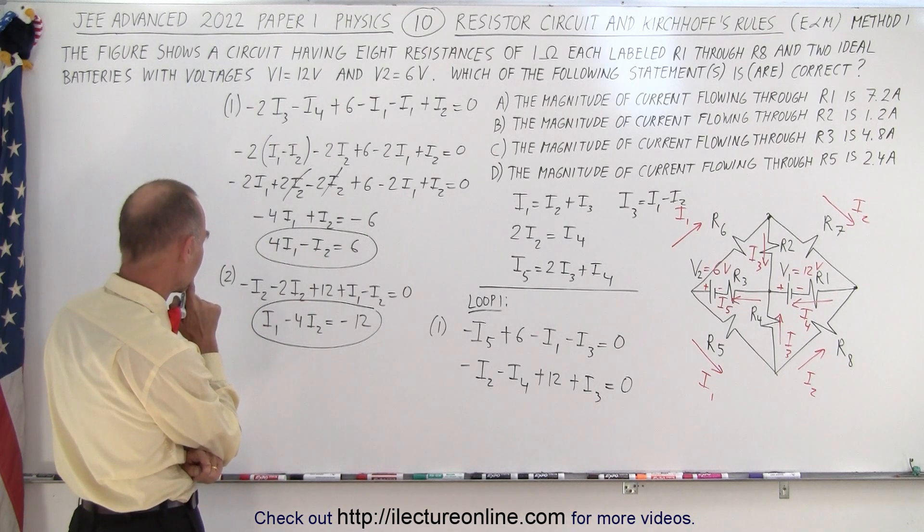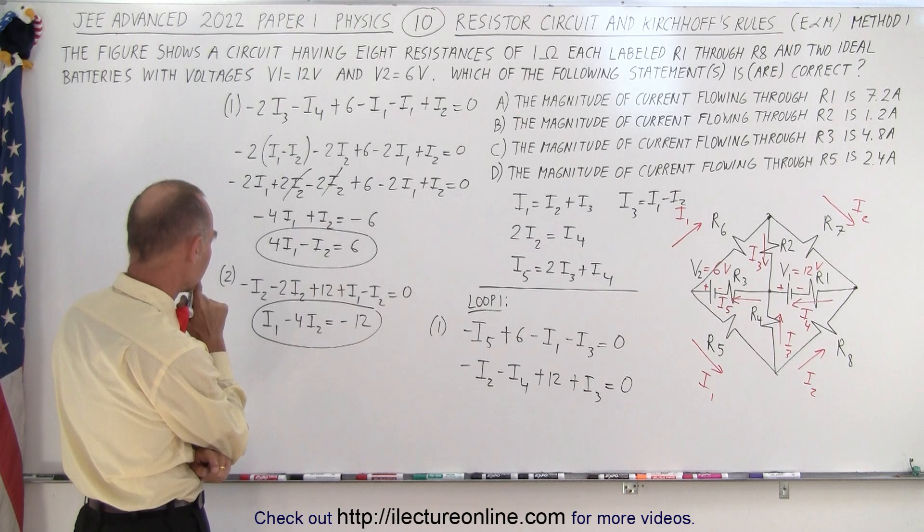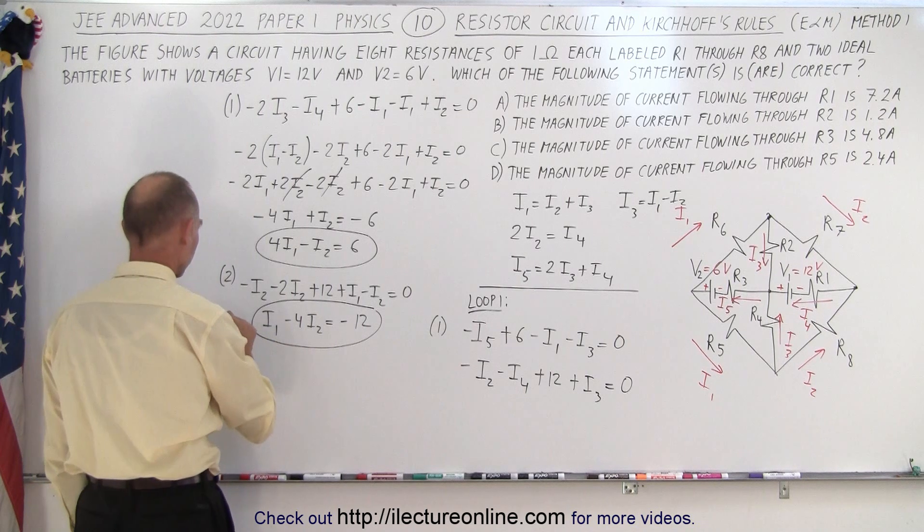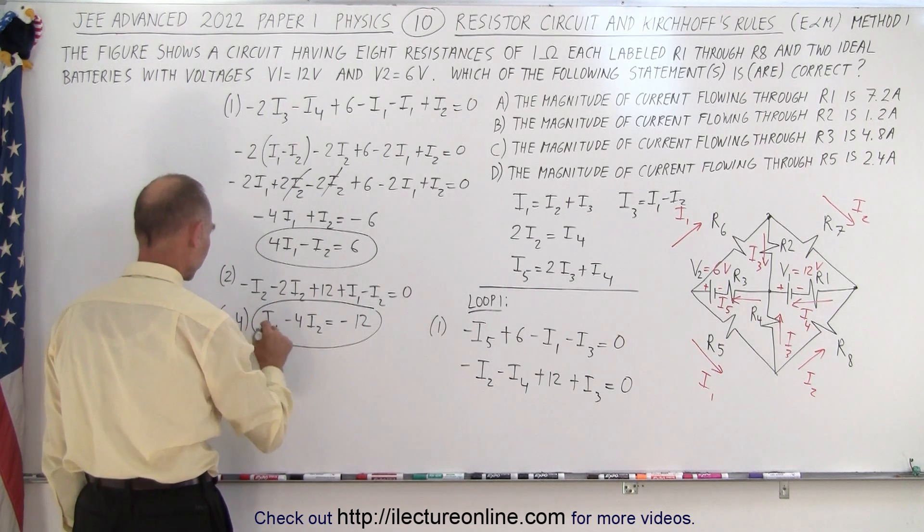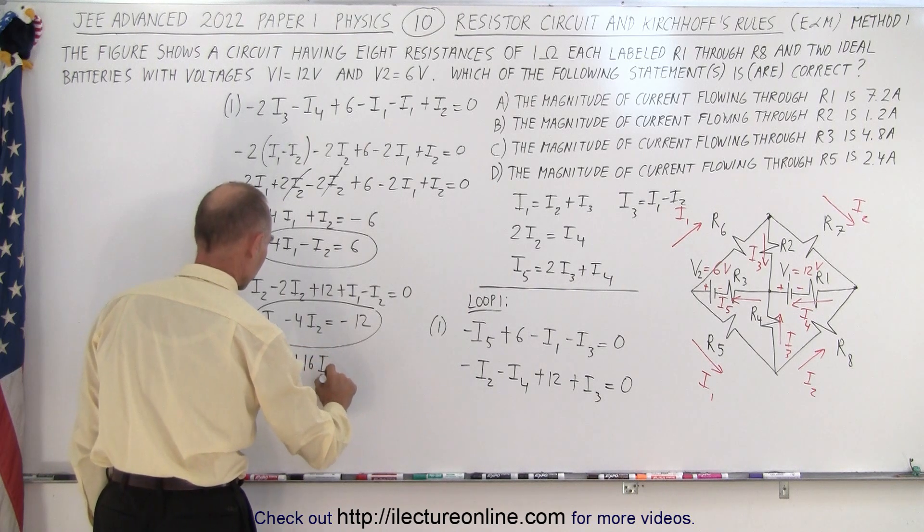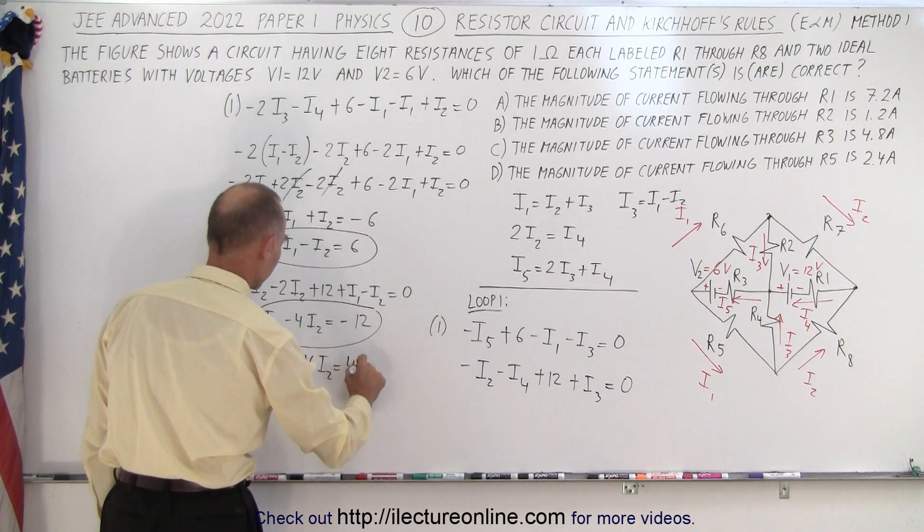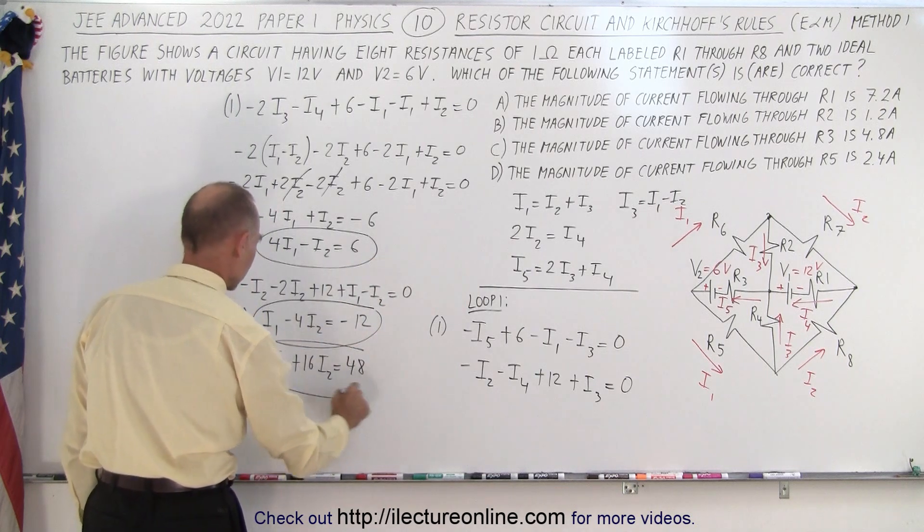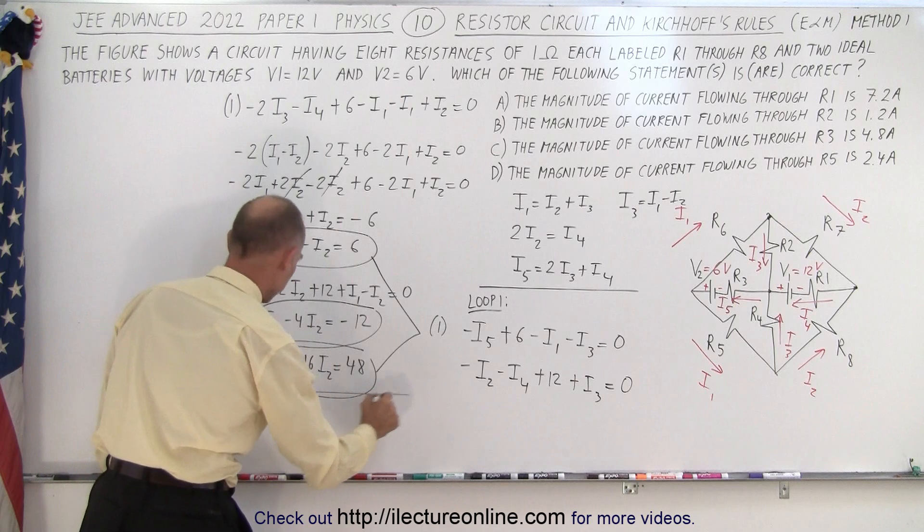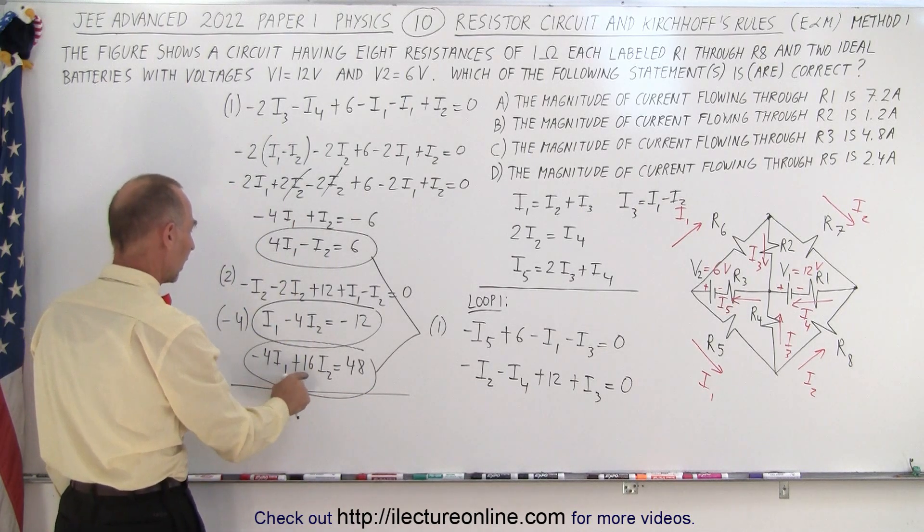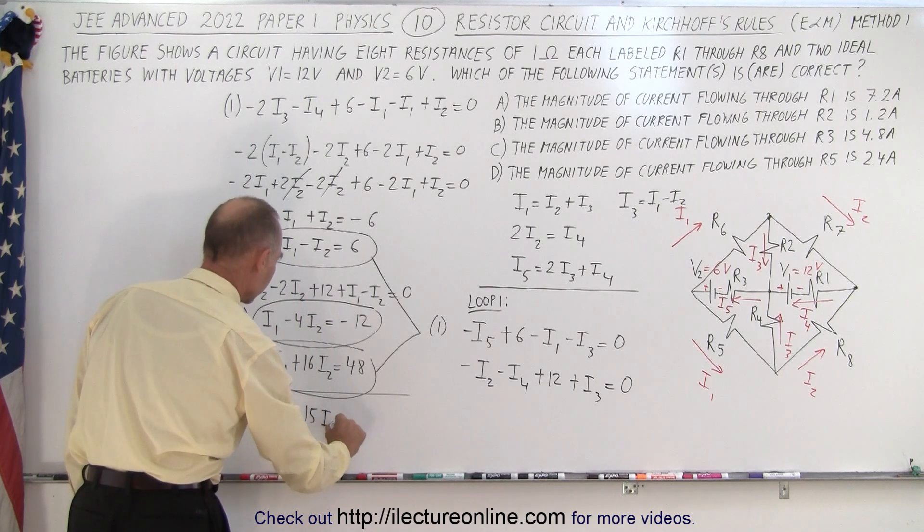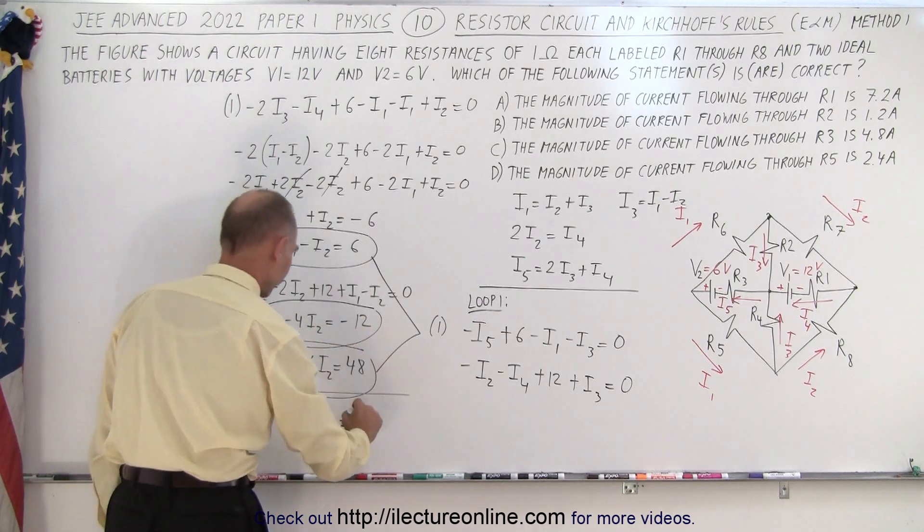How about if I multiply both sides by a minus 4? I'm going to multiply both sides by minus 4, so this gives me minus 4I1, plus 16I2, equals a positive 48. So now I'm going to combine these two equations. If I add them up, the I1s drop out. I have 16I2 minus 1 is 15I2, is equal to 48 plus 6, or 54.